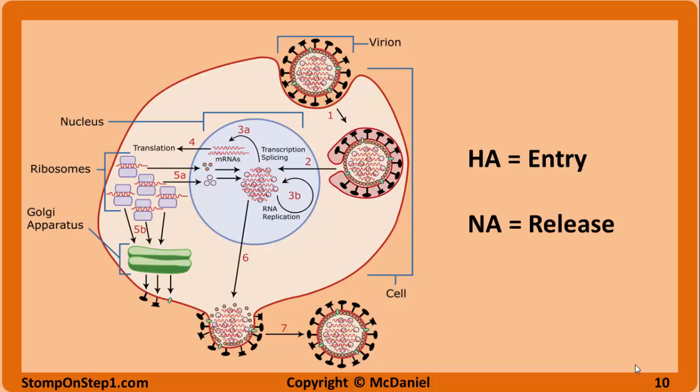Since HA and NA are so integral to the function of the virus, they are targets for preventing and treating influenza. The body creates antibodies against hemagglutinin. These antibodies bind to HA, thereby inhibiting the attachment of the virus to the surface of the host cells. Individuals with antibodies against certain types of HA are immune to that subtype of the virus. Neuraminidase inhibitors are a class of antiviral drugs that prevent the release of viruses by inhibiting the action of the neuraminidase enzyme. Examples include zanamivir and oseltamivir (Tamiflu). If the patient is diagnosed within 48 hours of the onset of symptoms, one of these medications can be added to the treatment regimen to lessen the severity and decrease complications. However, antipyretics and analgesics are usually sufficient for treatment.